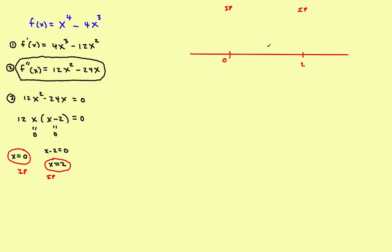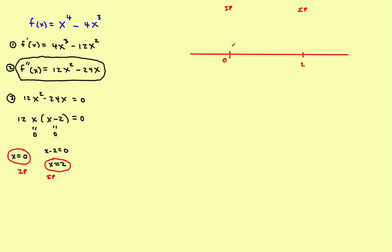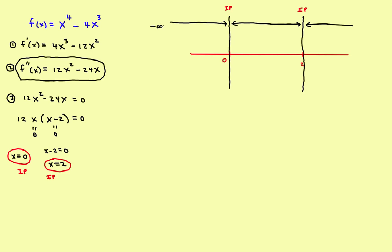Step four: use the inflection points to divide the graph up into separate intervals. With inflection points at x = 0 and x = 2, we get three intervals: from negative infinity to 0, from 0 to 2, and from 2 to positive infinity.